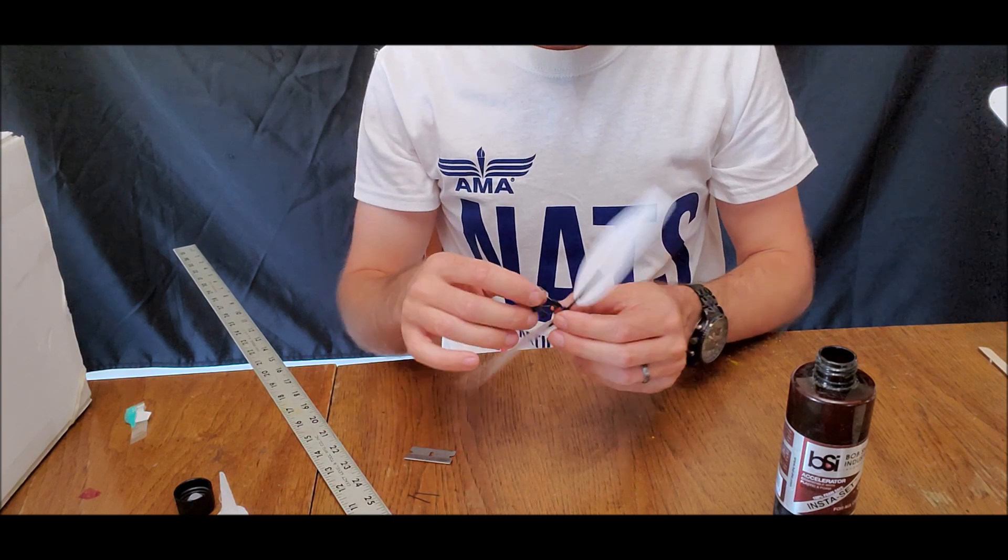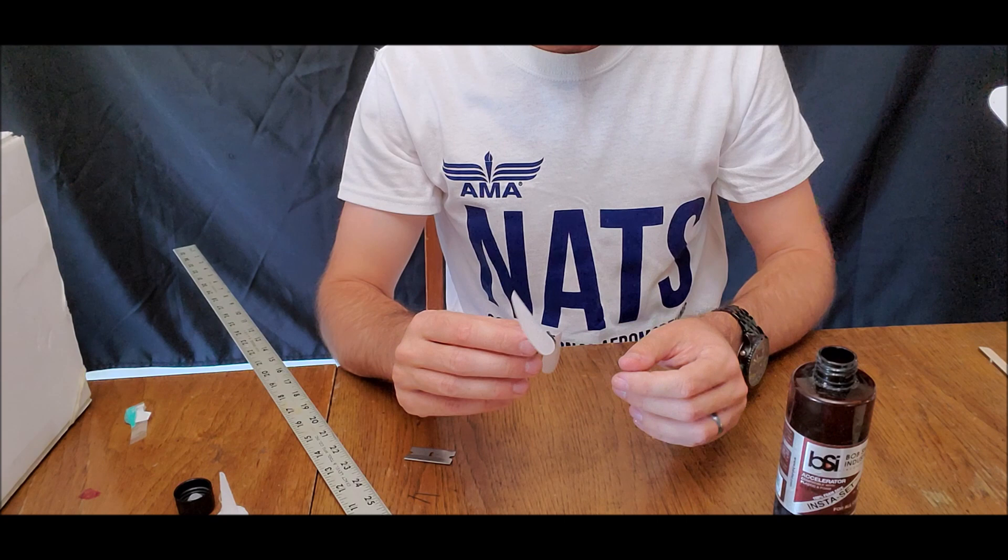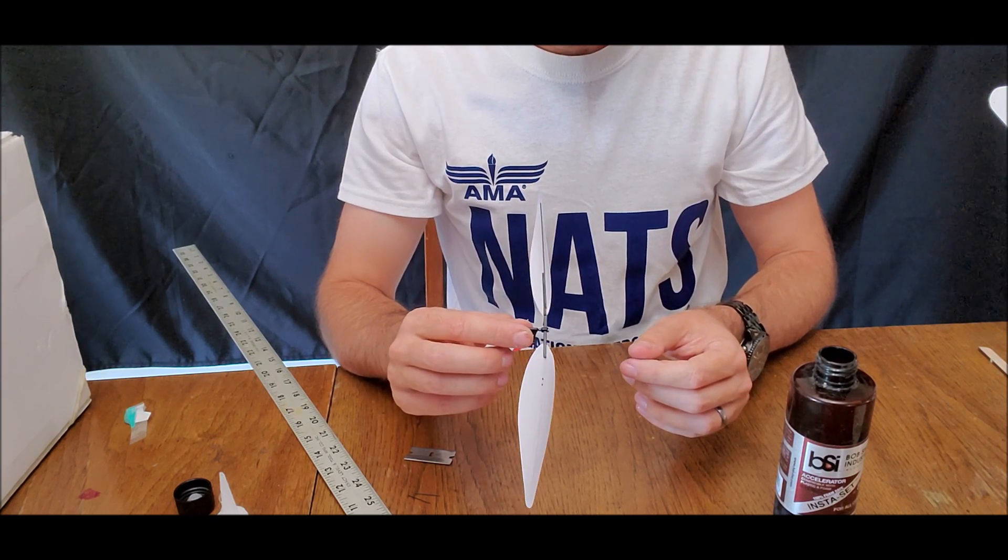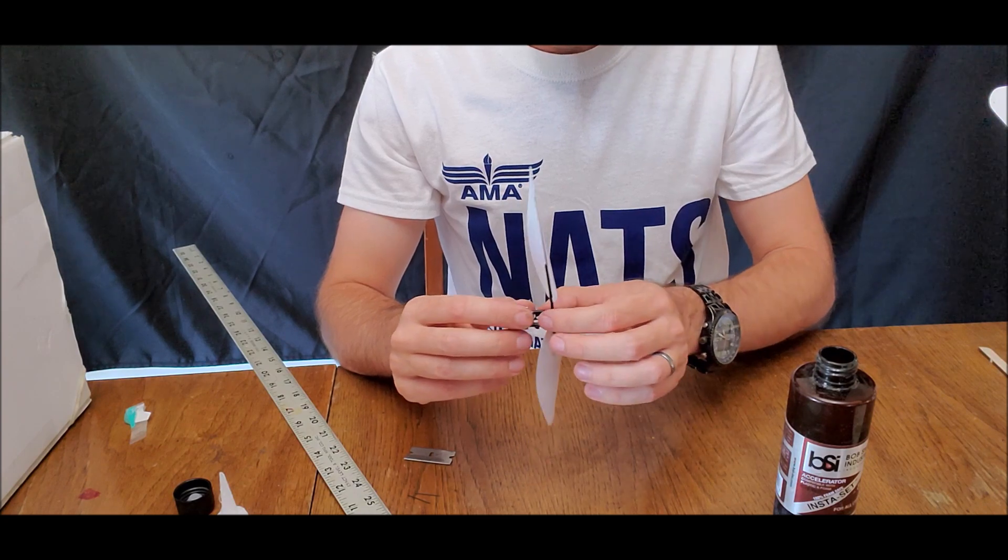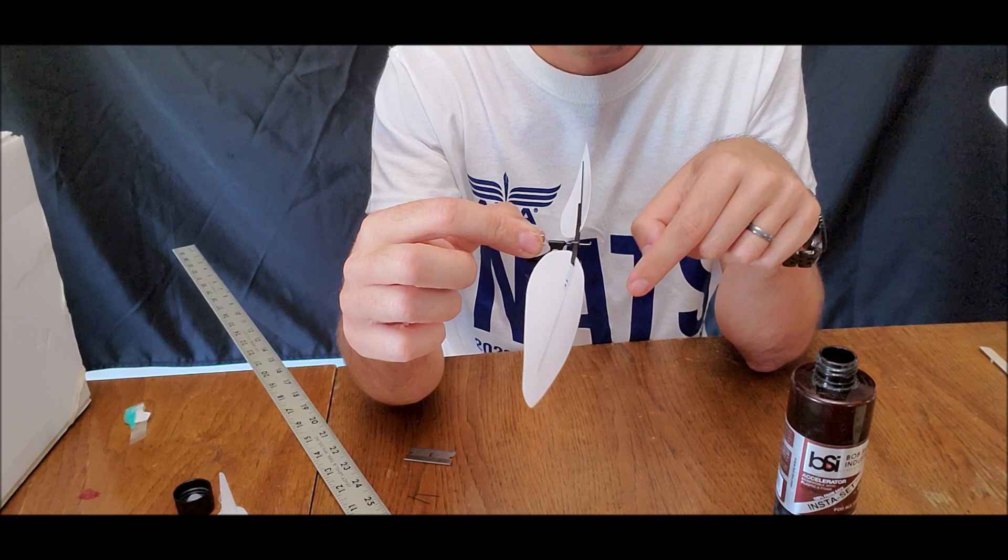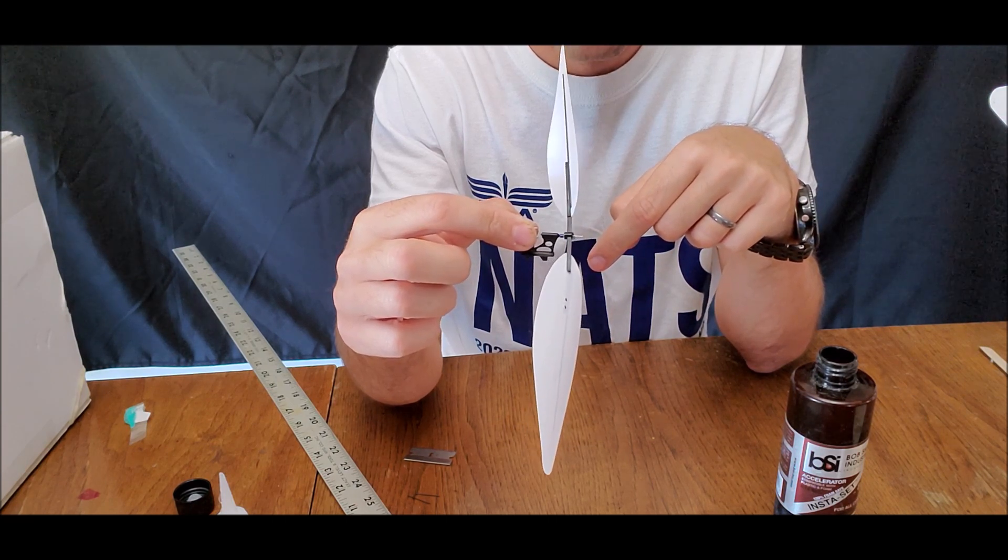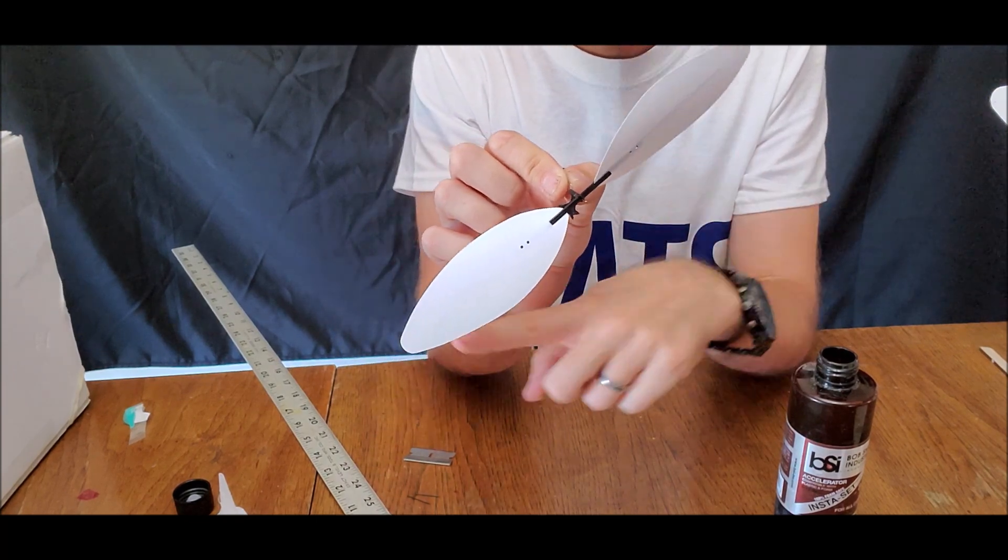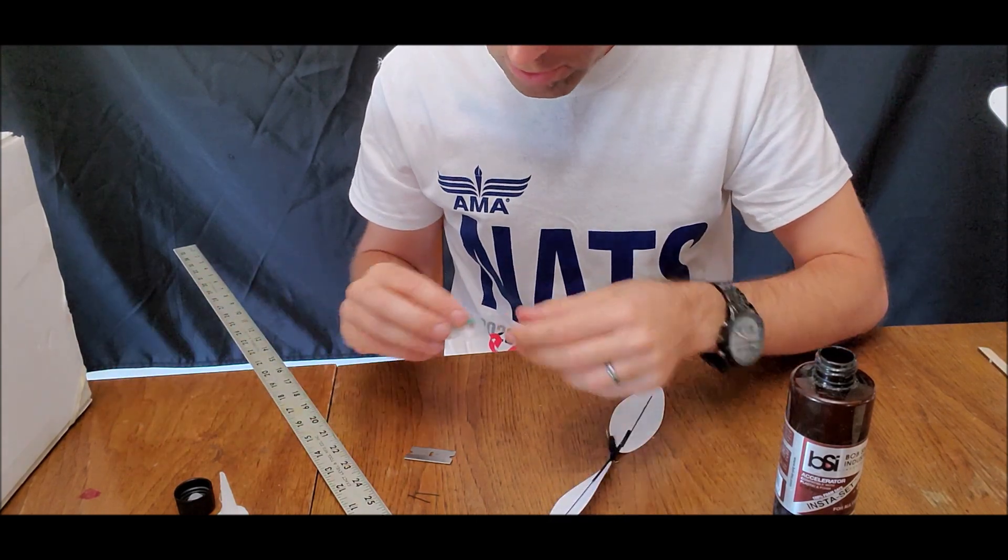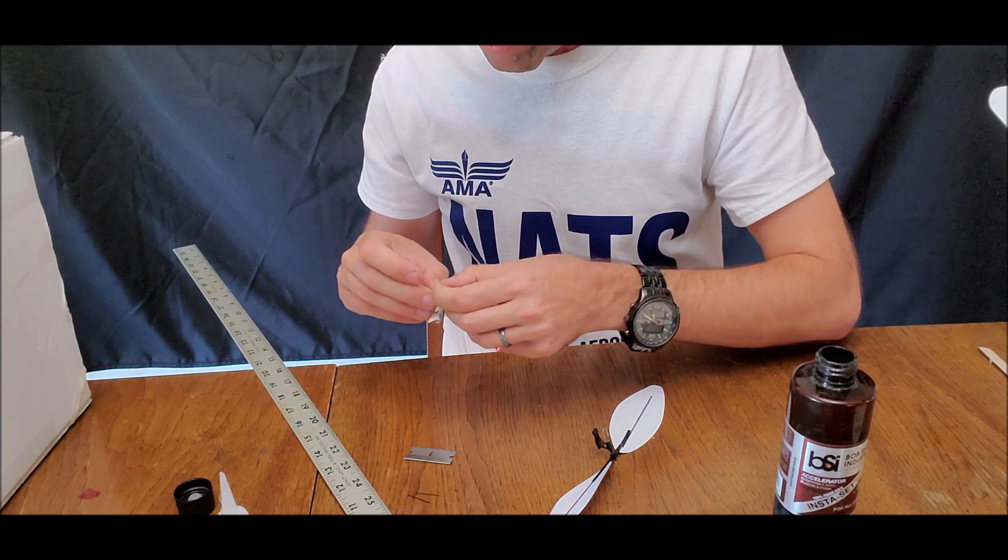The next thing we want to do is this propeller can still vibrate pretty heavily so we want to make sure that it's balanced. So if I hold this, I'm holding it by the prop shaft not by the bearing and this one actually, now we've got one blade you notice is consistently falling towards that one.